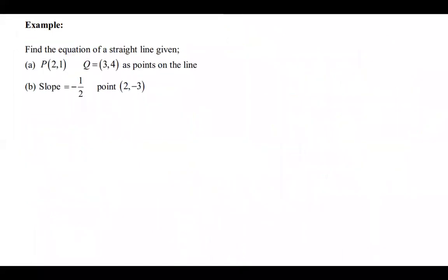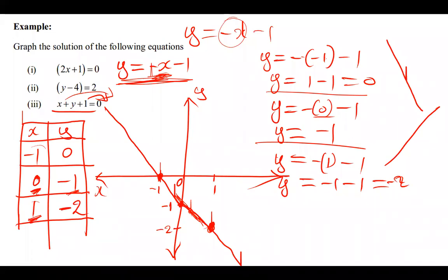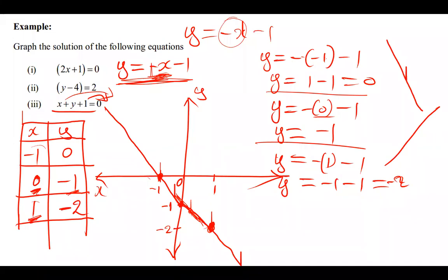You can pick any numbers for your table of values. For example, you could pick 100, but then you'd get -101, making approximation harder. That's why I prefer -1, 0, and 1 — they are close together and manageable. The minimum should be three numbers; you can use more, and you'll still get the same straight line.